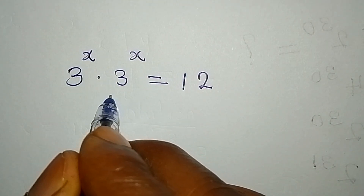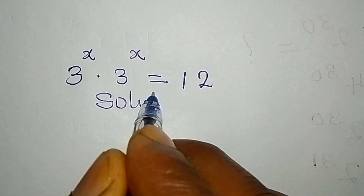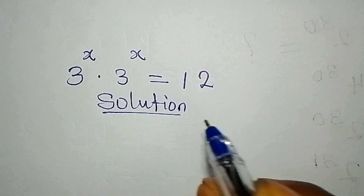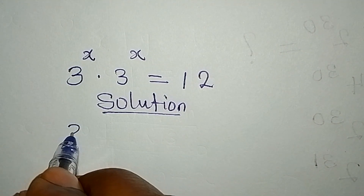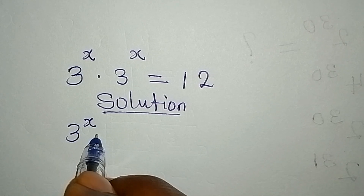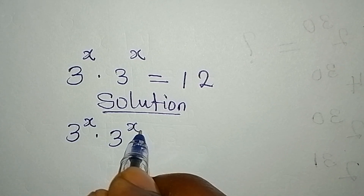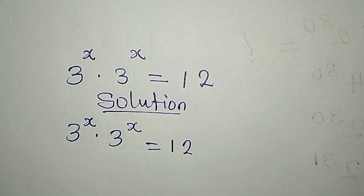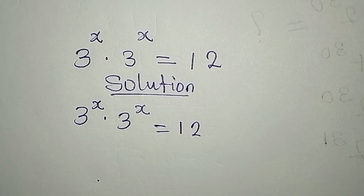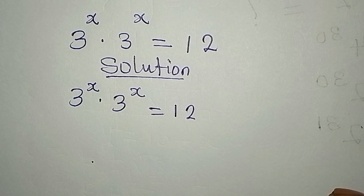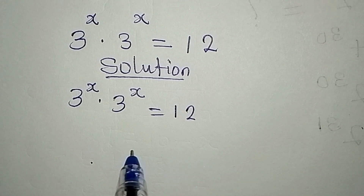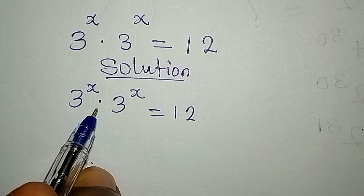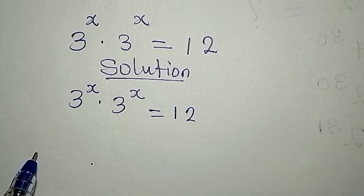Hello everyone, you are welcome to Few Core Mathematics. We have 3 to the power of x multiplied by 3 to the power of x equals 12. We are going to solve this in detail. We have 3 to the power of x times 3 to the power of x.